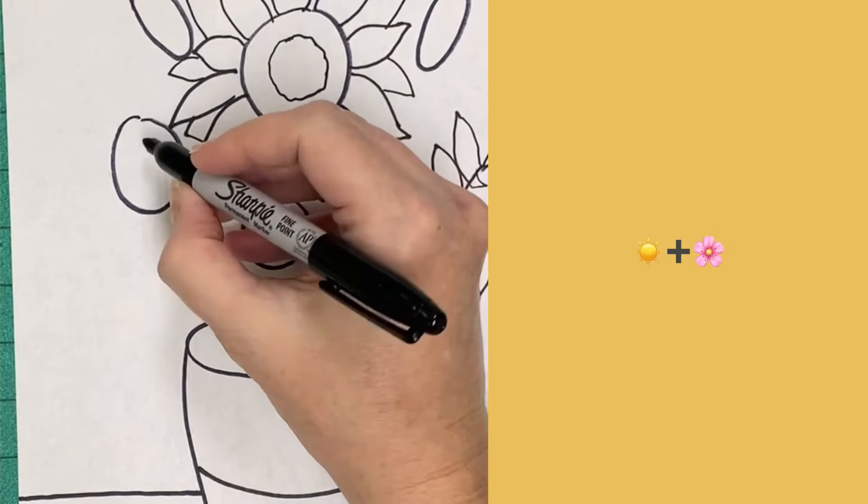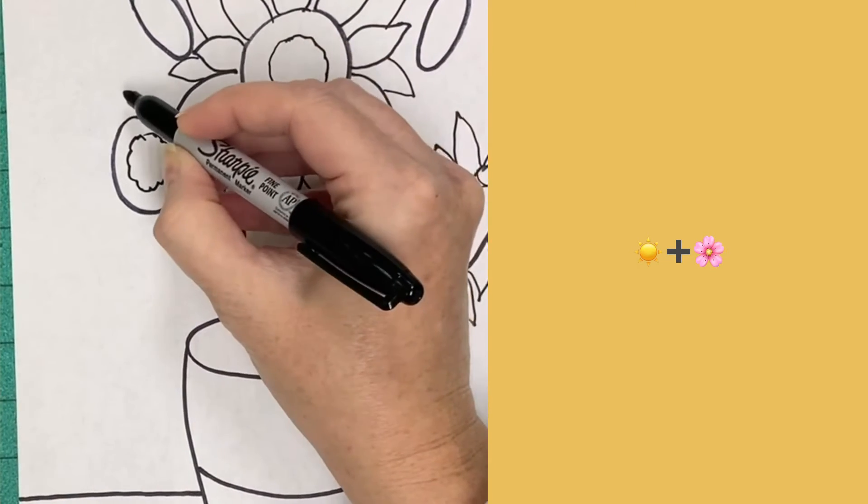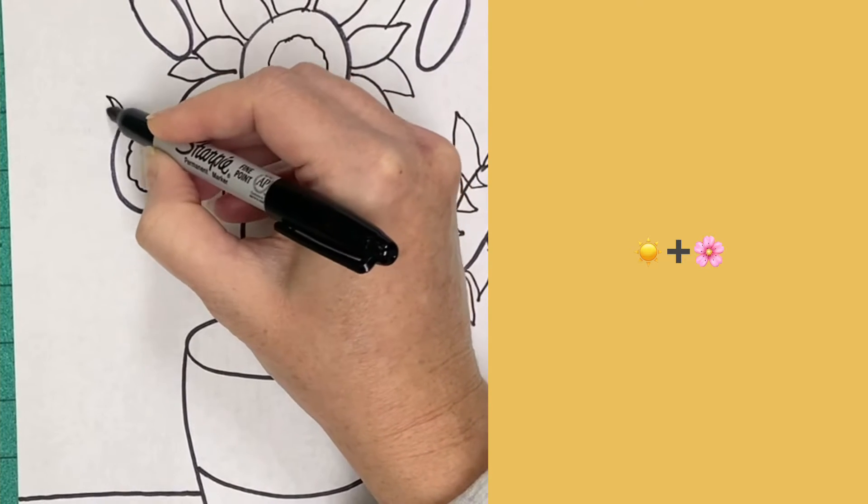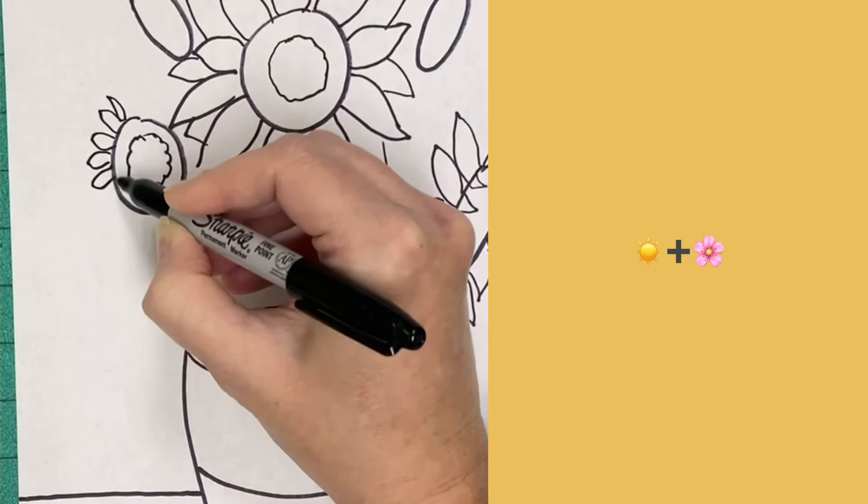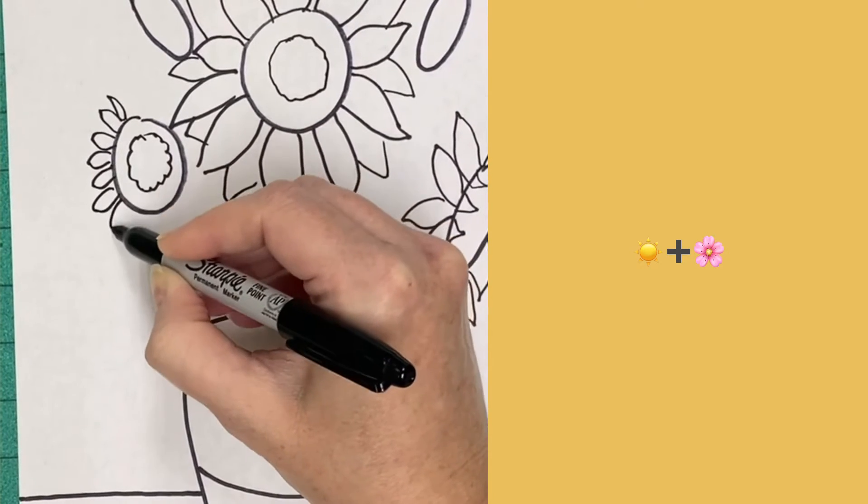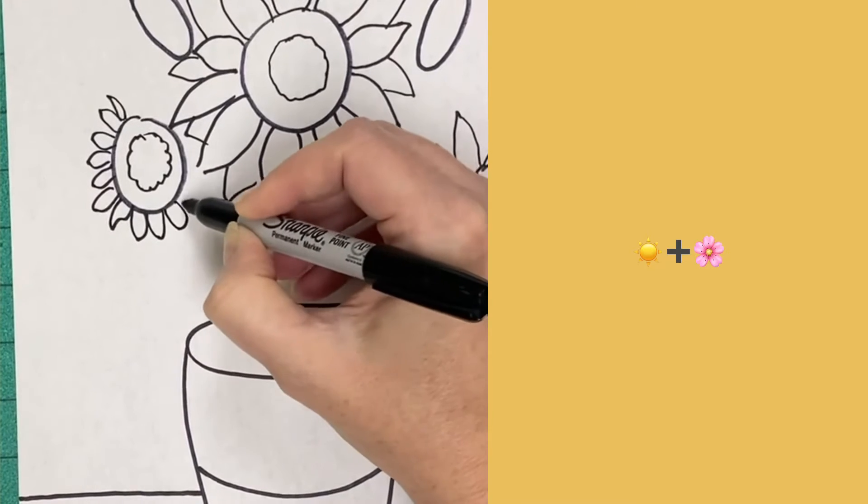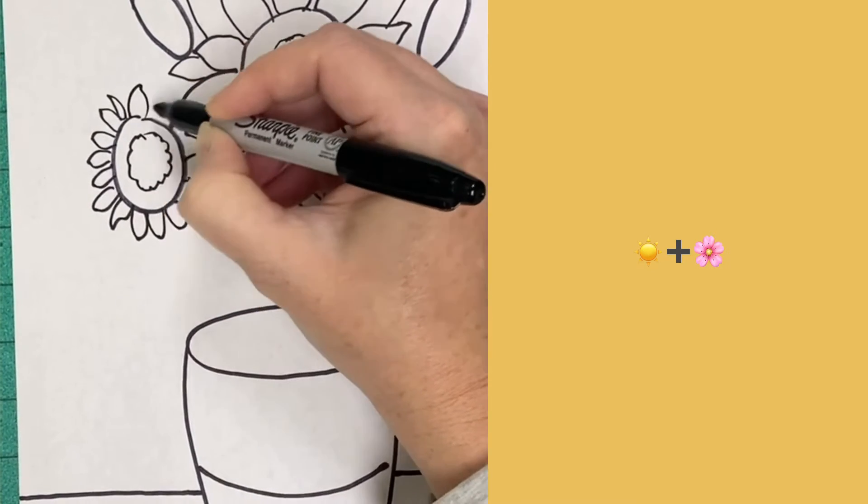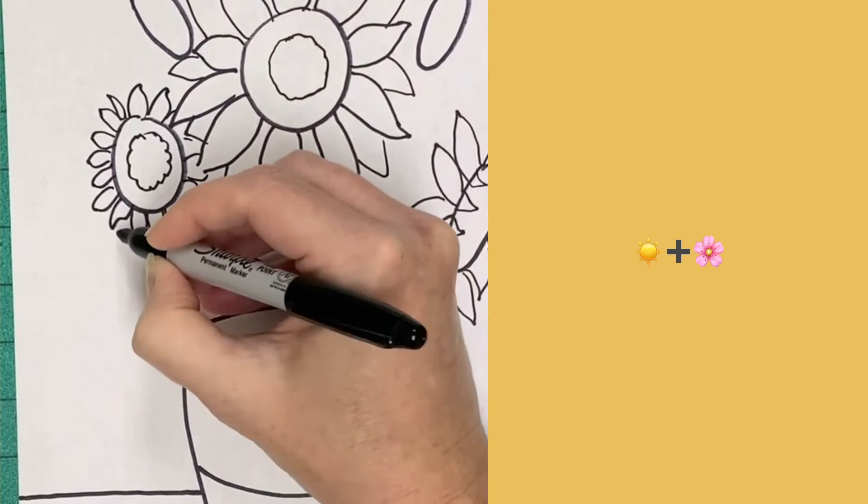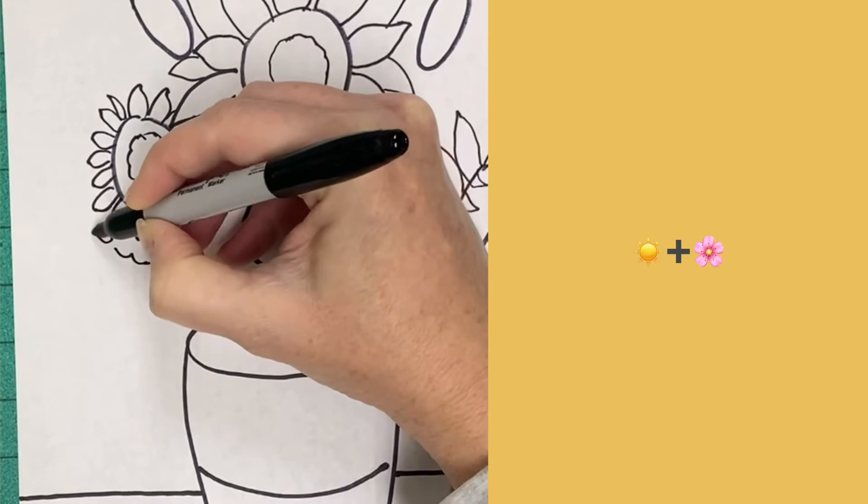I'm going to do this sunflower in a little bit different of a style. I'm putting kind of a bumpy circle inside of the circle then I'm going to put tinier sunflower petals all the way around and then I'm going to go completely around the outside edge with another little fluffy bumpy line.